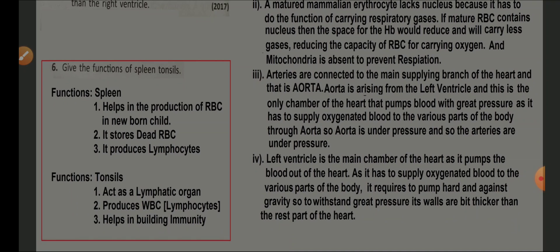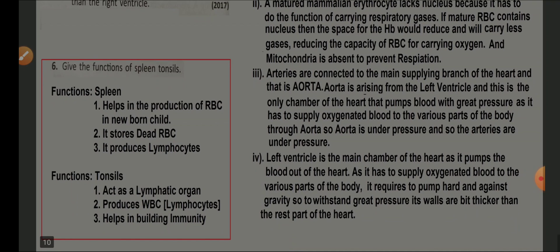Functions of spleen and tonsils: spleen helps in the production of RBCs in a newborn child, stores dead RBCs, and produces lymphocytes. Tonsils act as a lymphatic organ, produce WBCs (lymphocytes), and help in building immunity.